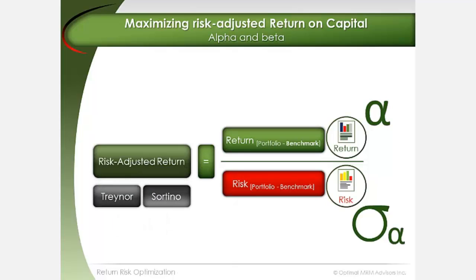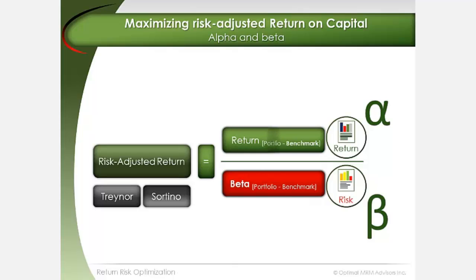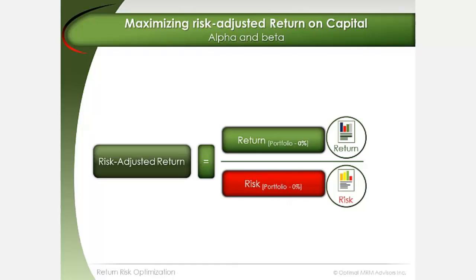The Treynor ratio, for example, divides excess return by the portfolio's beta — the portfolio's sensitivity to changes in the underlying benchmark. An appropriate benchmark can be the S&P 500 index or some appropriate non-risk-free benchmark. As a simplified model, a benchmark or risk-free return of 0% can be assumed in order to reduce the equation to portfolio return divided by portfolio risk.